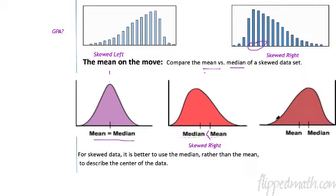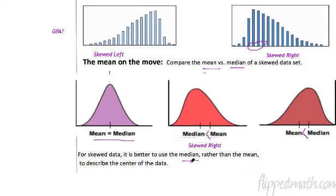What if it's skewed left? It's the same thing — a couple values spread down the number line pulls the average down. The median doesn't change. So we'd say the mean is less than the median. For skewed data, it is always better to use the median rather than the mean, because you can find the true middle of the data.